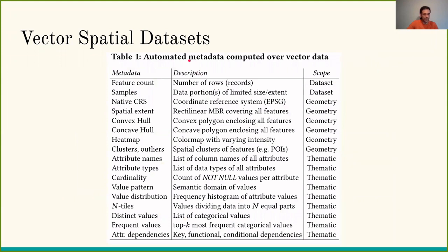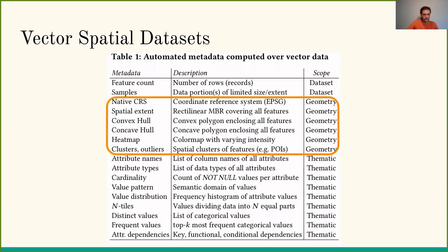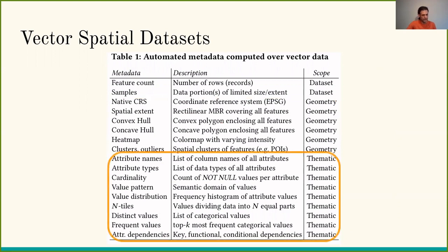For vector data, profiling can be applied in different fashions to automatically compute metadata. Regarding the whole dataset, we have feature count and samples. Regarding the geometries, we could have the native coordinate reference system, the spatial extent, and various alpha shapes for the extent of geometries. Finally, we examine the thematic attributes where relational data profiling could be applied, including attribute types, cardinality — the count of non-null values per attribute — and other things.